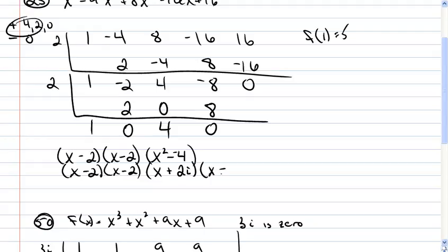x minus the square root of negative 4, which is going to be 2i. So there is my fully factored form, my list of zeros, negative 2, and plus or minus 2i.